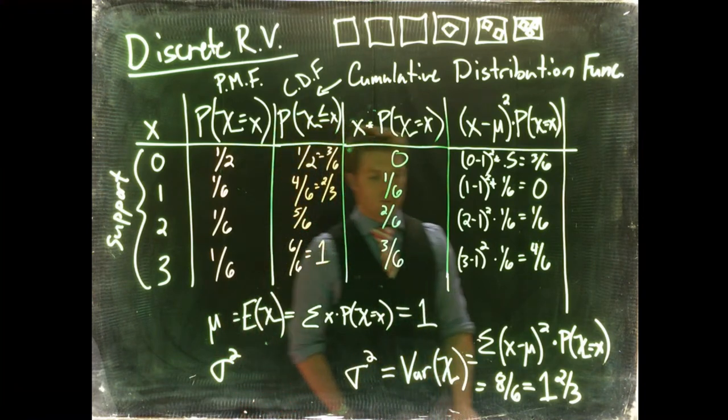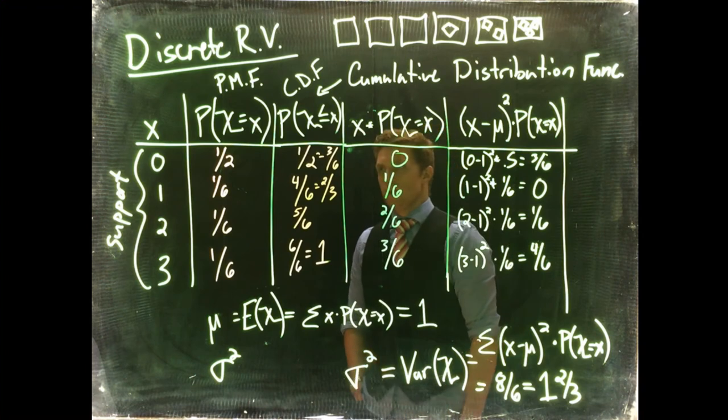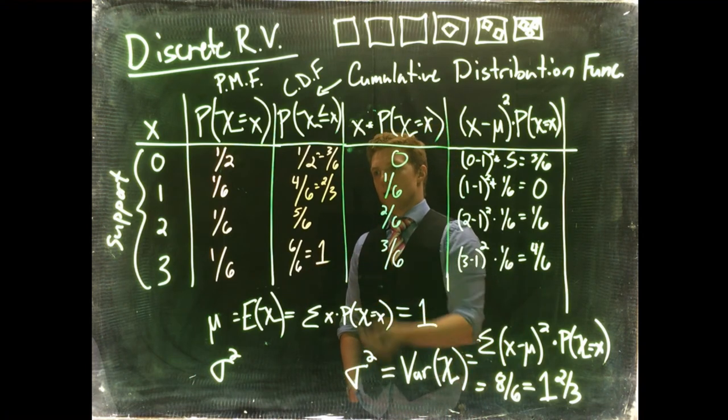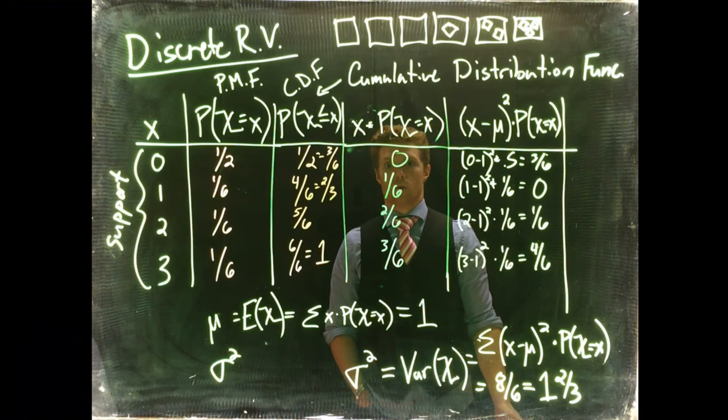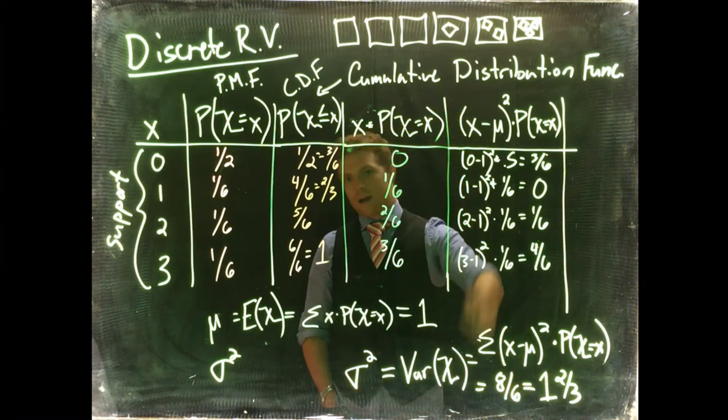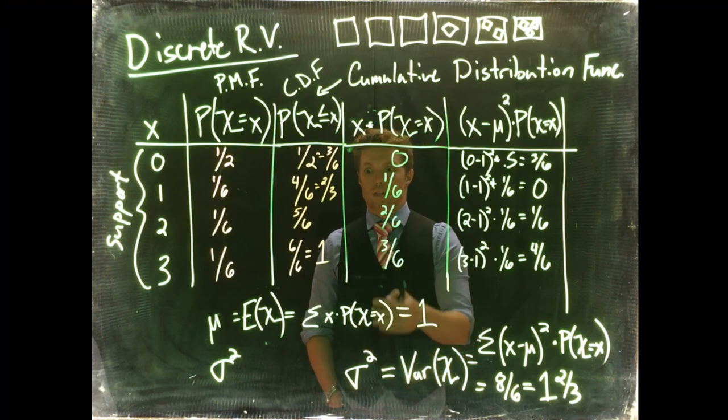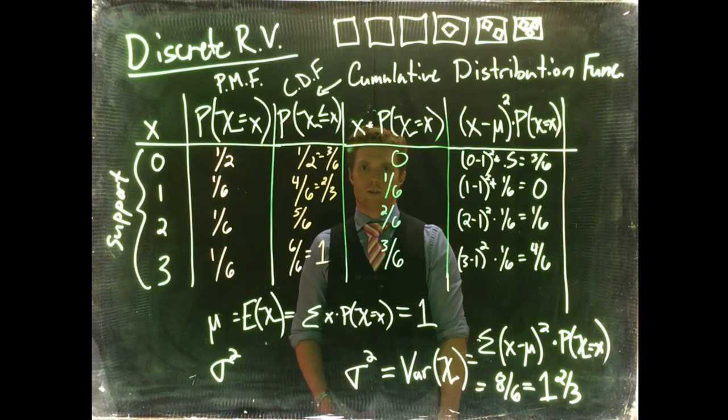And if we wanted the standard deviation, we would just need to take the square root of this value. Now, if you have a lot of possible outcomes, like let's say you're rolling some big dice, like a 20-sided dice or something, doing this by hand starts getting ridiculous. And so in the future videos, I'm just going to show you how to do it in Excel. And you can do it in Excel from here on out.